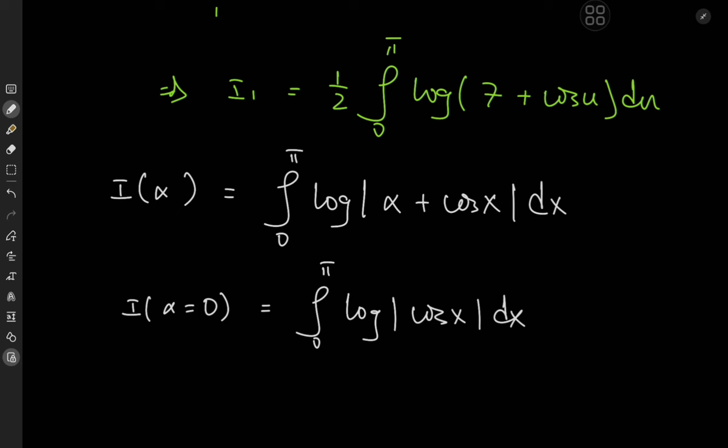Now that we have our plan, we differentiate with respect to α. Switching the operators, I′(α) equals the integral from 0 to π of the partial derivative with respect to α of log|α plus cosx| dx. Differentiating with respect to α, the absolute value sign disappears — you can verify this by differentiating log|x| and applying the chain rule — and we conveniently get 1 in the numerator, over α plus cosx.